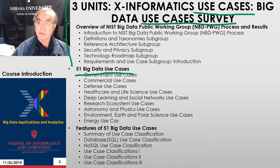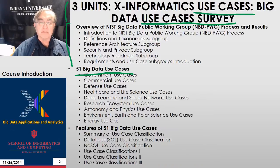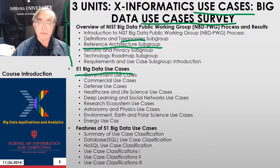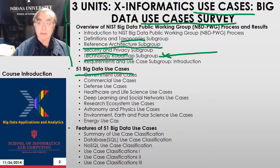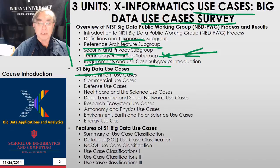Because NIST only does open things, it's trying to do things of general value to industry and academia. Most of the people involved were from industry, with a sizable number from academia. There were various working groups: definitions and taxonomies, which defined what big data was; the so-called reference architecture, which describes the setup of computing subsystems; a very effective group on security and privacy; and a somewhat difficult group dealing with the technology roadmap. The work described after that came from the requirements and use cases subgroup, which I was one of the co-chairs of.